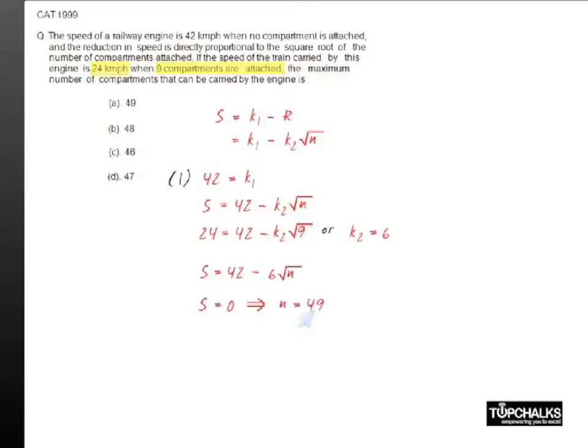becomes zero when 49 compartments are attached to it, which means the train comes to a halt. The question asks what is the maximum number of compartments that can be carried by the train, and we are